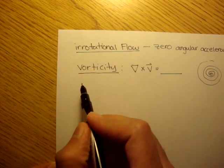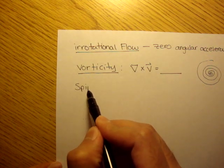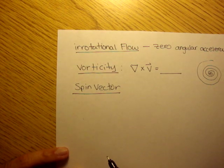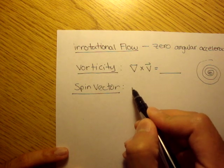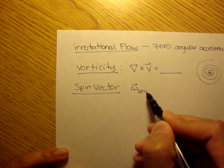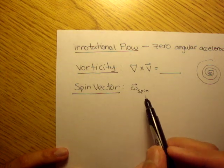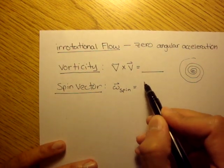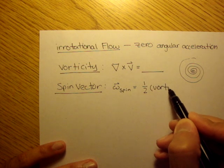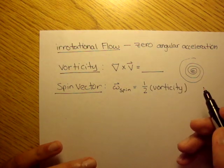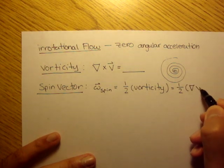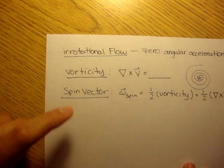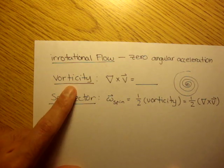The third term is the spin vector. The spin vector is usually denoted omega — lowercase omega. And all the spin vector is, is just one half of the vorticity. So it's just one half of del cross v. That's all the spin vector is.